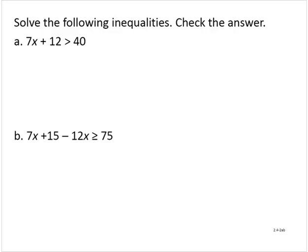Solve the following inequalities. For exercise a: 7x plus 12 is greater than 40. We identify the variable term and isolate it. I will subtract 12 from both sides, so then we have 7x is greater than 28. And we will isolate the variable by dividing through by 7, yielding x is greater than 4.